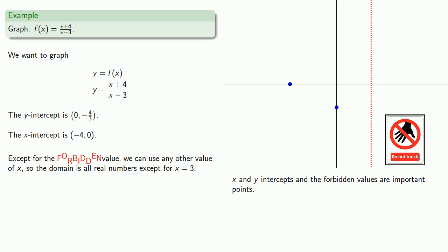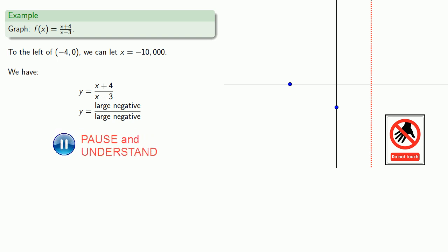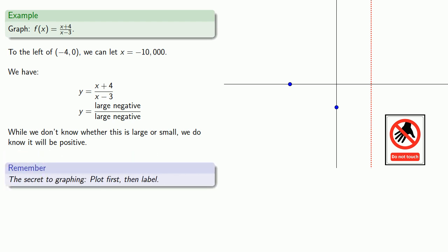Now, the x and y intercepts and the forbidden values are important points, but if we want to get a picture of what the graph really looks like, we have to consider what happens between those points. To find out, let's find points between the important points. It's useful to remember how we handled inequalities by picking test values. So here, to the left of this point, (-4, 0), we can let x equal -10,000. Remember, we want to either go big or go home because it's actually easier to deal with large numbers. So x is a large negative number, so y is going to be a large negative number divided by a large negative number. While we don't know the magnitude, we don't know whether this is large or small, we do know it will be positive. So again, the secret to graphing is plot first, then label, so we have a point somewhere to the left that's positive. We'll put it here.